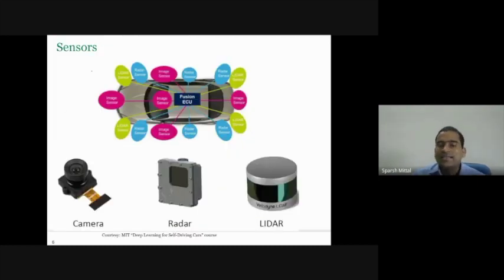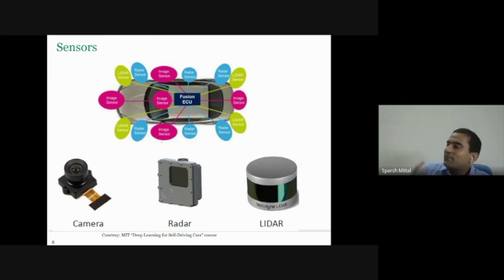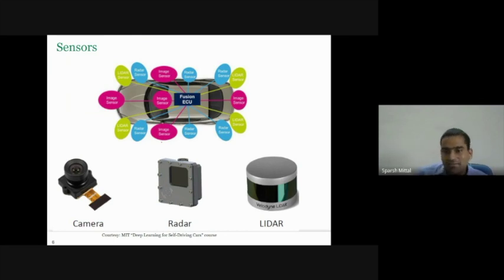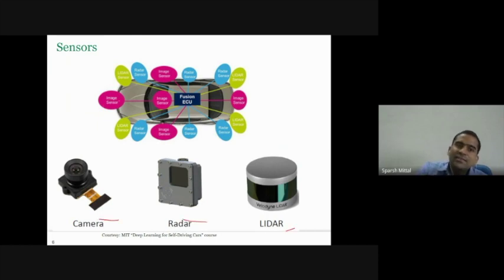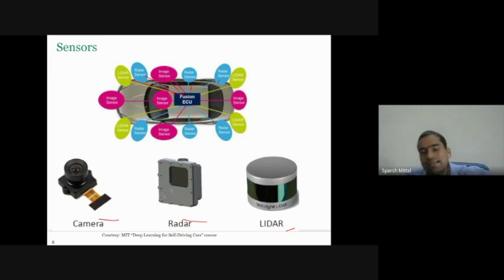Now let's talk about sensors. Computer vision alone is not sufficient for driving a car — we need other sensors too. There are cameras, radar sensors, and image sensors. All sensor readings need to be fused together to make decisions. The autonomous car shown has many different types of sensors placed around it.